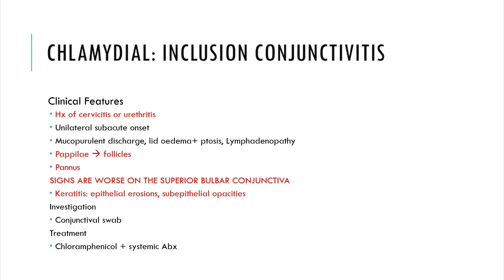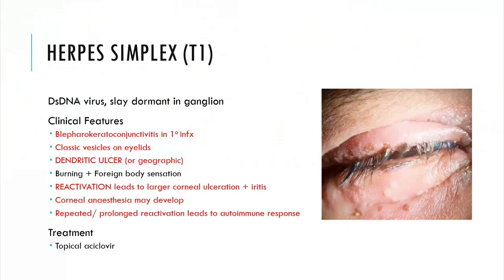That covers gonococcal and chlamydial conjunctivitis. Moving on to viral with herpes simplex — a double-stranded DNA virus which can stay dormant in the ganglion. Clinical features are blepharokeratoconjunctivitis, which is inflammation of the eyelids, cornea and conjunctiva, occurring in primary infection along with classic vesicles on the eyelid. Corneal involvement is via a dendritic ulcer, which is pathognomonic — a branching ulcer of the cornea. It can be geographic in cases of immunosuppression, meaning ulceration covers large areas of the cornea.